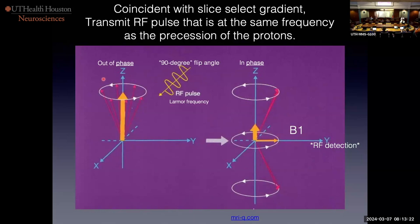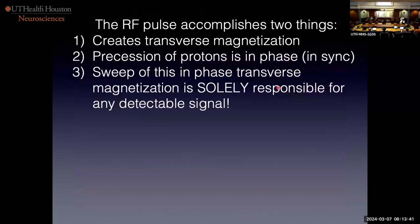The 90-degree flip angle RF pulse increases transverse magnetization. The other thing it does is force phase coherence. Right now, protons are canceling — every proton is out of phase with another, with no net signal. It forces all the active protons to precess in phase. The RF pulse creates transverse magnetization, the precession of the protons is in phase, and it's the sweep of this magnetization that's solely responsible for the signal.